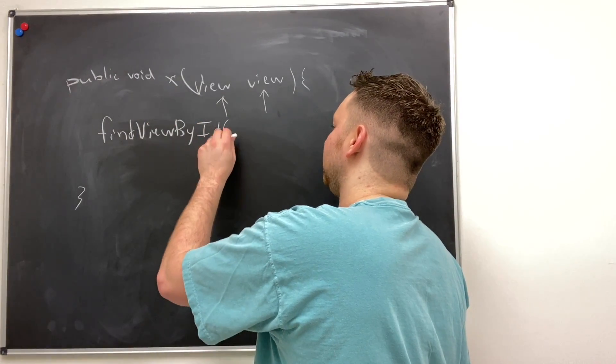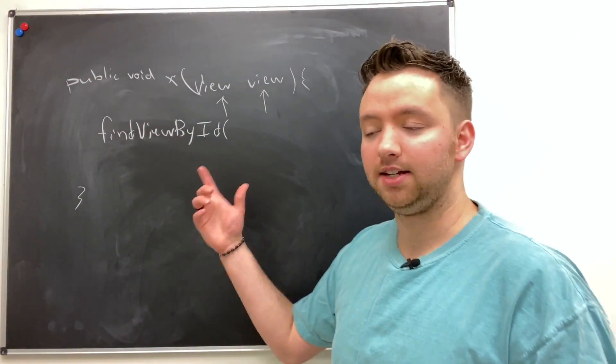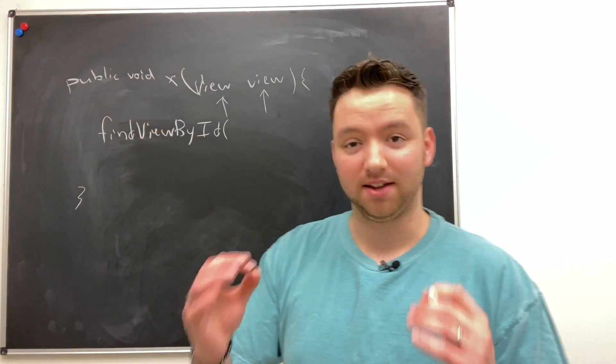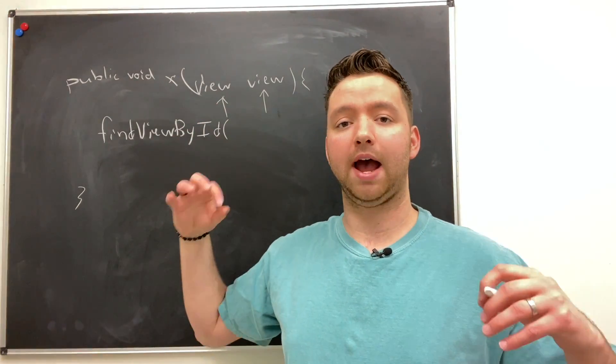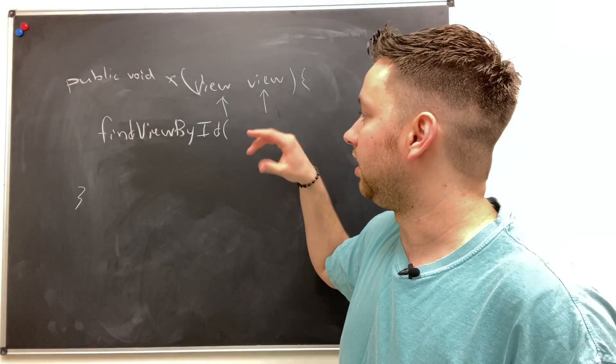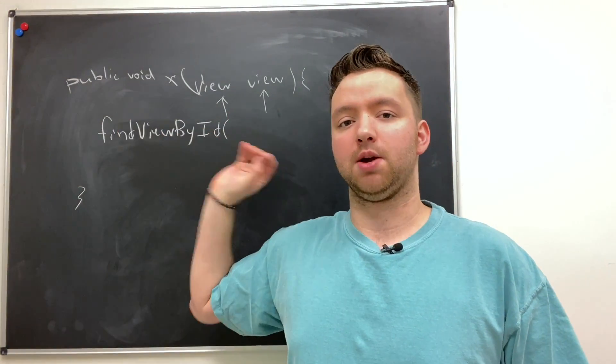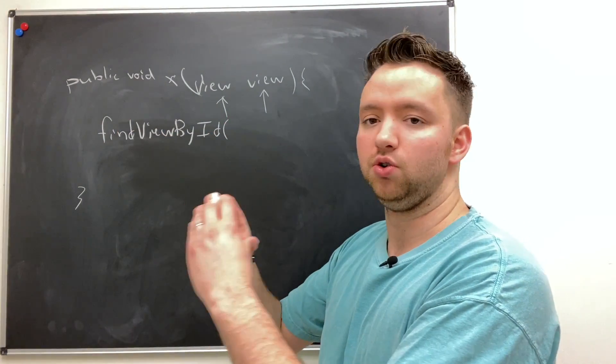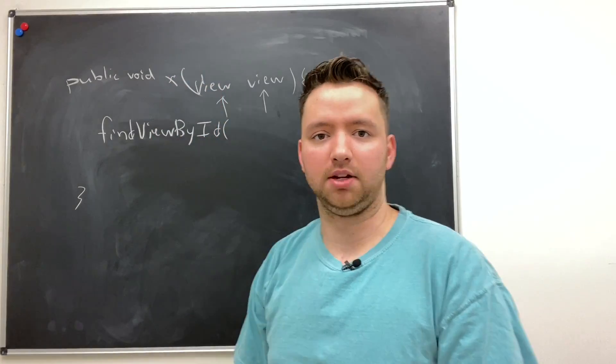It's find view by ID and then you pass in an ID, and we talked back earlier why IDs are so important. This is why we use them to access different elements and to get an object that references that view on the activity page, on the screen.